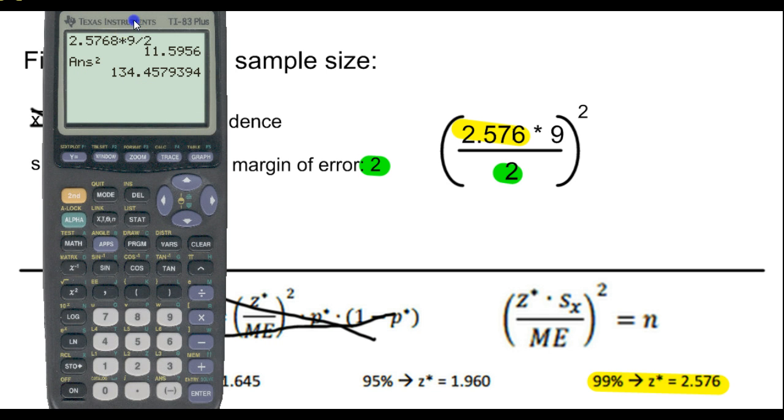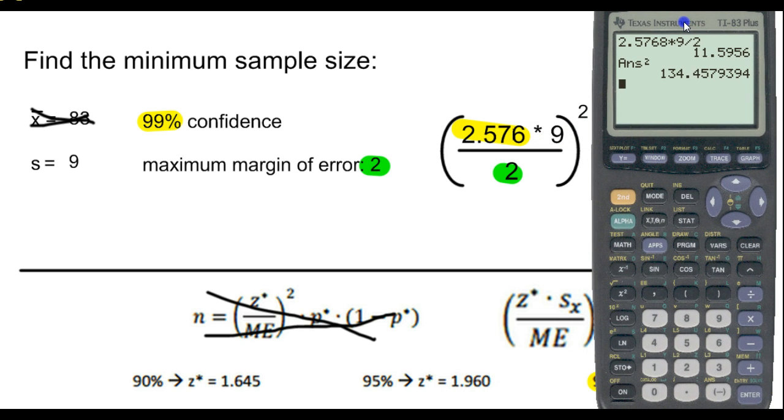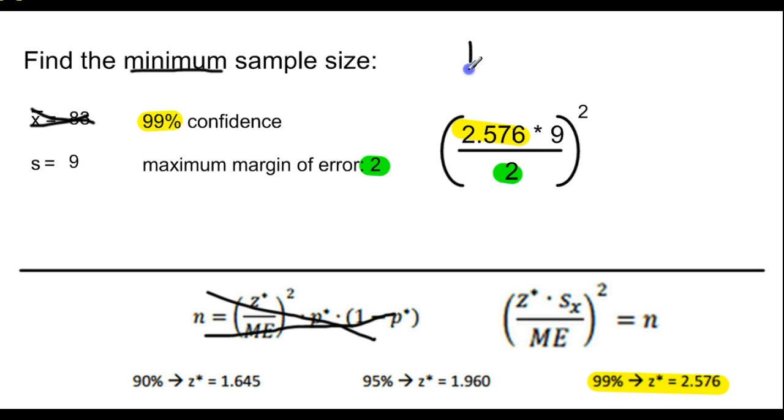But the interesting thing, unlike some of the other sample size calculations where we just rounded it off, we're calculating the minimum sample size. And if 134.4 is the minimum, you will need to round up. Even though 0.45 would actually round down to 134, you would round 134.4579 up to 135. So our minimum sample size, now written as an integer, as a whole number, is 135. So be careful with that.